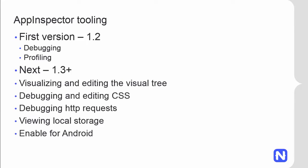The second major addition in developer tools is the App Inspector for iOS. In this release we are shipping debugging and profiling tools for iOS. You'll be able to inspect the current state of variables, set breakpoints, and fully debug your application. You'll also be able to record the application execution and later profile and optimize all the JavaScript code during runtime. Features planned next include visualization and editing of the Visual Tree at runtime, debugging and editing CSS styles, monitoring HTTP requests, and viewing the local storage.